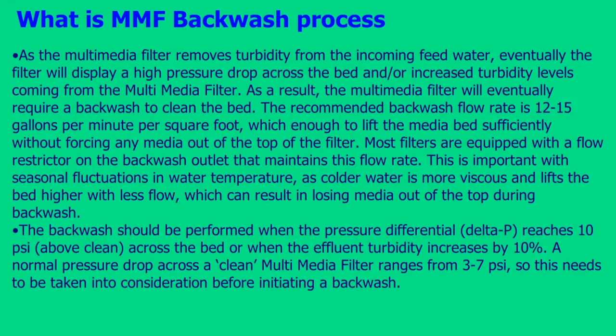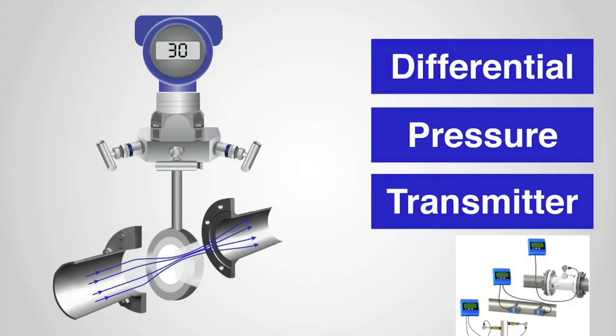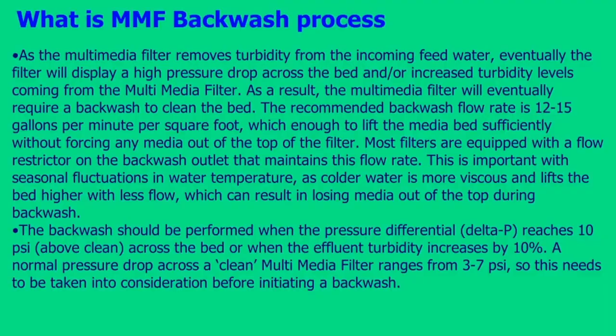Most filters are equipped with a flow restrictor on the backwash outlet that maintains this flow rate. This is important with seasonal fluctuations in water temperature, as colder water is more viscous and lifts the bed higher with less flow, which can result in losing media out of the top during backwash. The backwash should be performed when the pressure differential (delta P) reaches 10 PSI above clean across the bed, or when the effluent turbidity increases by 10%. A normal pressure drop across a clean multimedia filter ranges from 3 to 7 PSI, so this needs to be taken into consideration before initiating a backwash.